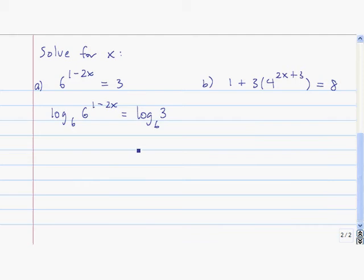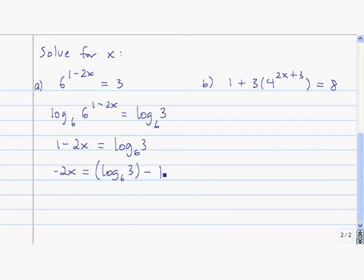In this one, the first thing that you do is take log base 6 of both sides. Then you simplify the left-hand side, so it's just equal to the exponent. Subtract 1 from both sides, then divide both sides by negative 2. So this is the solution.